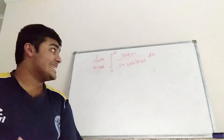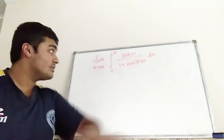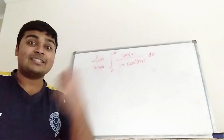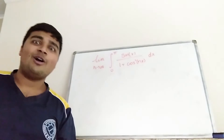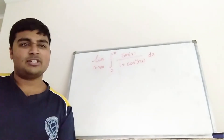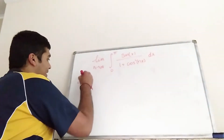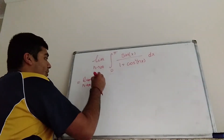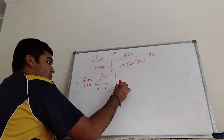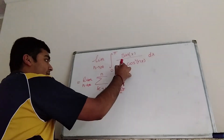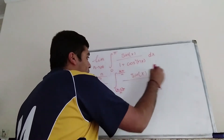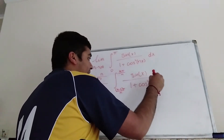What I'm going to do to evaluate this integral is firstly split it up into a bunch of different integrals. It's currently the integral from 0 to π, but I'm going to write it as the integral from 0 to π/n, plus the integral from π/n to 2π/n, plus the integral from 2π/n to 3π/n, and so on, all the way up to the integral from (n−1)π/n to nπ/n, which is just π. So this is precisely the limit as n goes to infinity of the sum from k=1 to n of the integral from (k−1)π/n to kπ/n of sin(x) / (1 + cos²(nx)) dx.